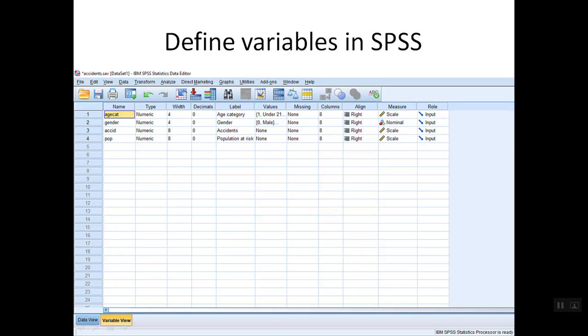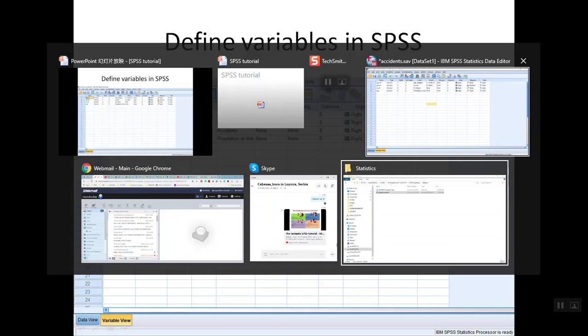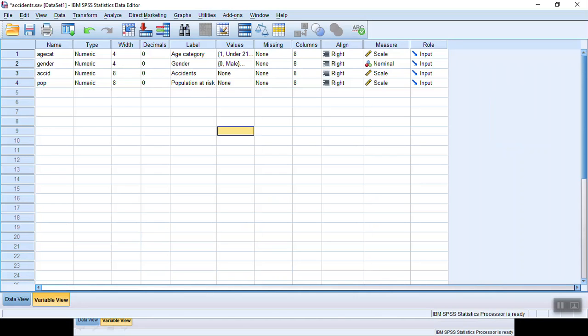When it comes to define variables in SPSS, let me jump to the interface of SPSS to further explain. So the name, as we explained in previous tutorial, we go to variable view to define variables in SPSS. Each row represents one individual variable, while each column represents different characteristics of that variable.